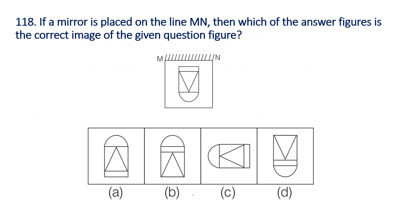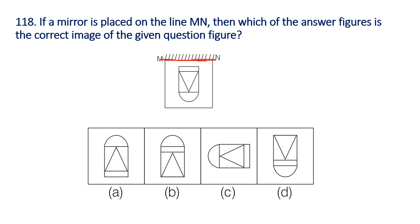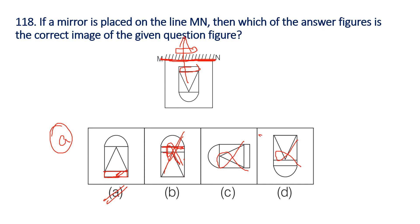Question 118: If a mirror is placed on the line MN, which of the answer figures is the correct mirror image of the given question figure? When the mirror is placed, the figure flips. The triangle is here inside the box. Just check the mirror image — the figure is tilted. So option is the answer.